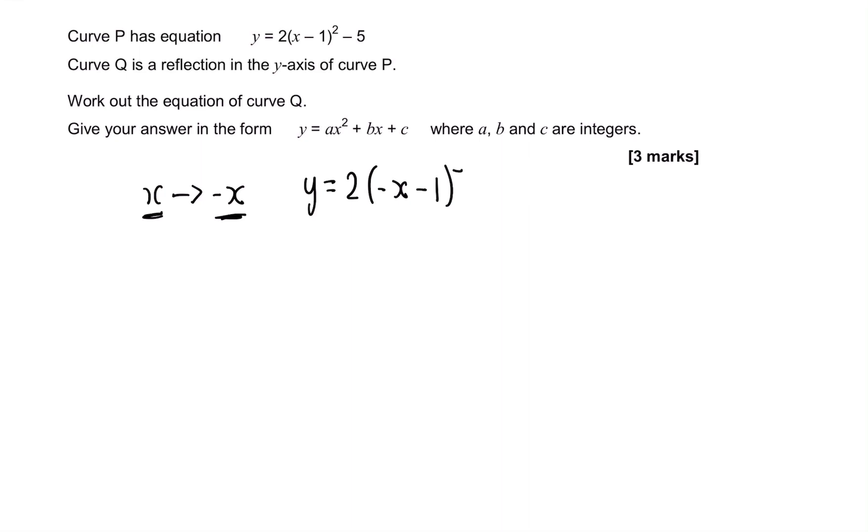Now we just expand this. Remember when squaring a bracket you have to multiply it by itself, not just square each term. Now we can expand this bracket by multiplying out. So we get minus x times minus x is positive x squared. Minus x times minus 1 is plus x. Minus 1 again, plus times minus x is going to be minus x. And minus 1 times minus 1 is 1.